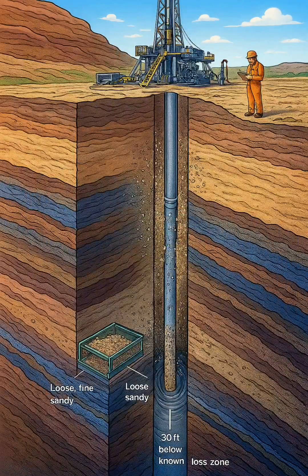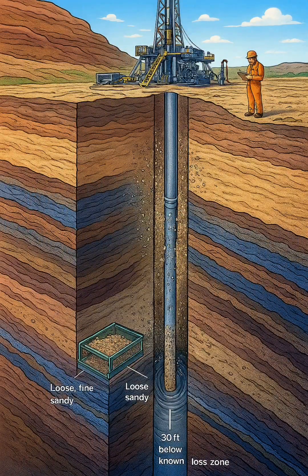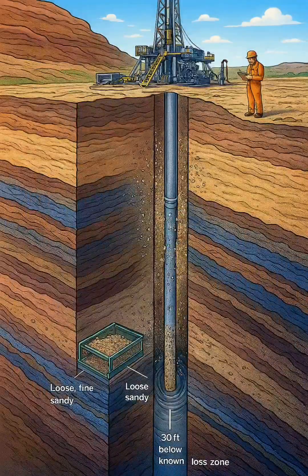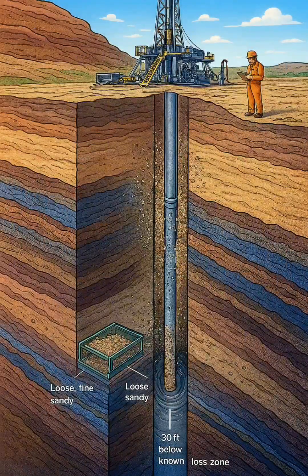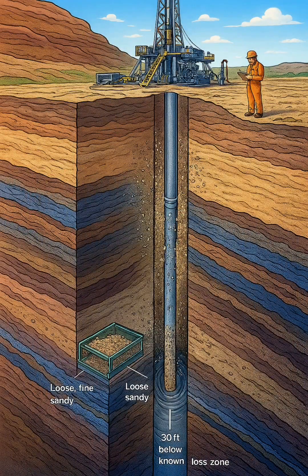After drilling 30 feet below a known loss zone, the mudlogger reports partial loss of returns. The driller notices a gradual increase in torque and drag, along with a slight reduction in rate of penetration (ROP). The standpipe pressure shows minor fluctuations, but circulation is still possible. The cuttings at the shale shakers appear loose, fine, and sandy, with evidence of unconsolidated material entering the mud system.